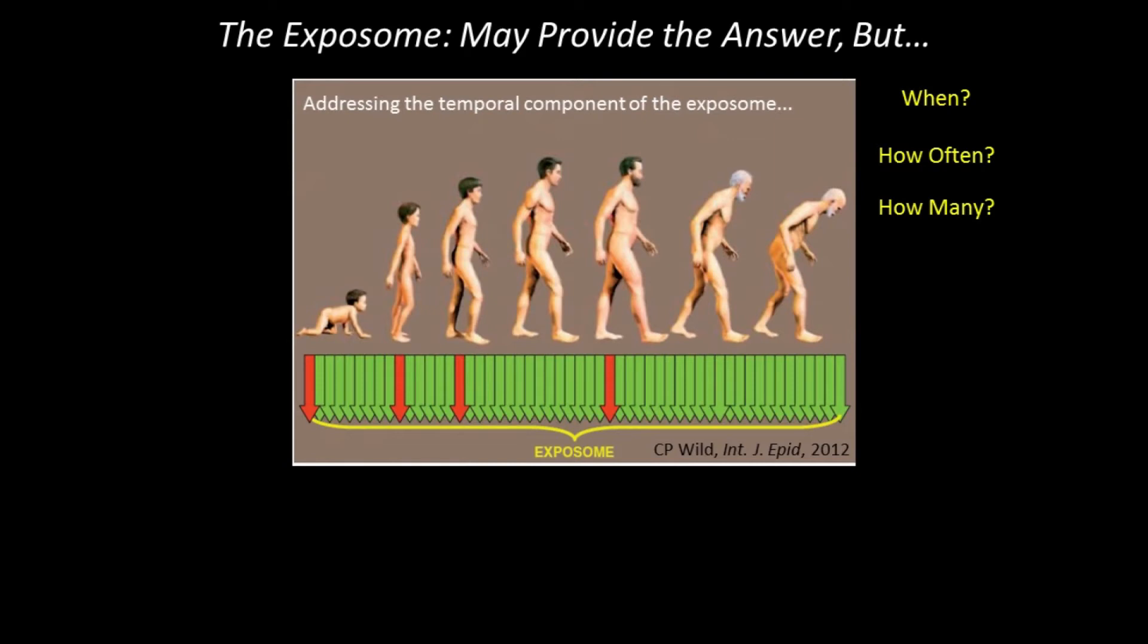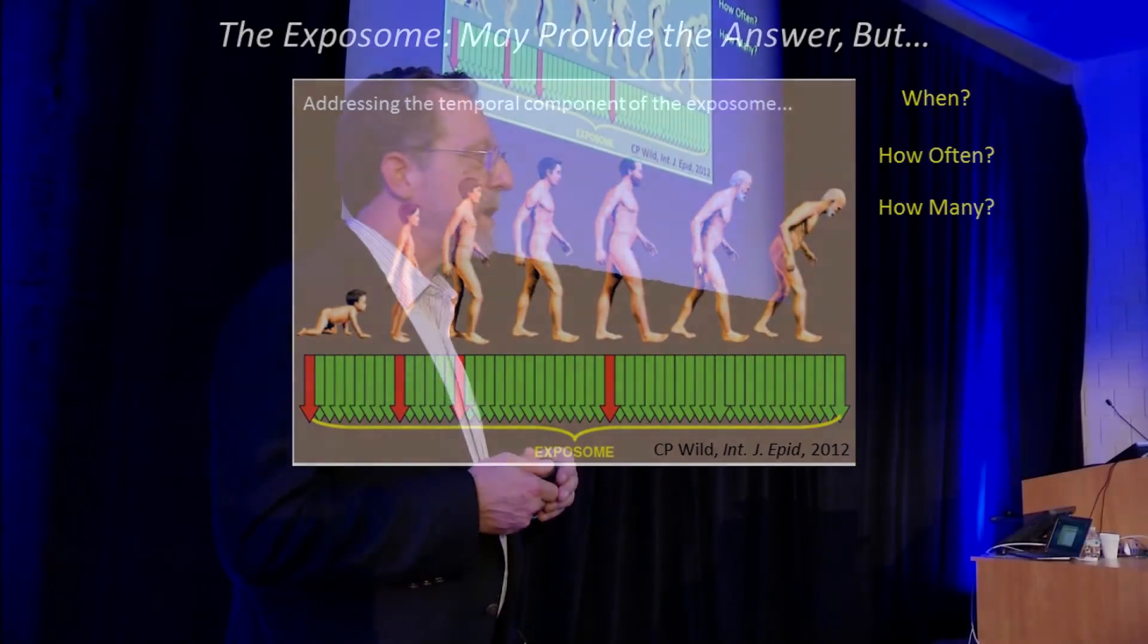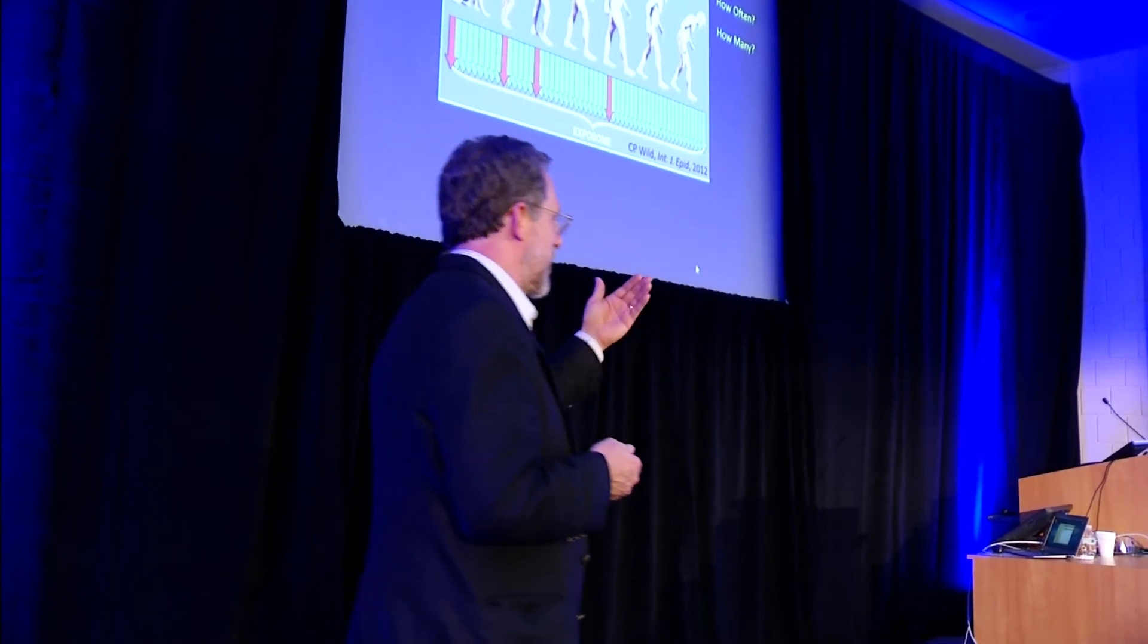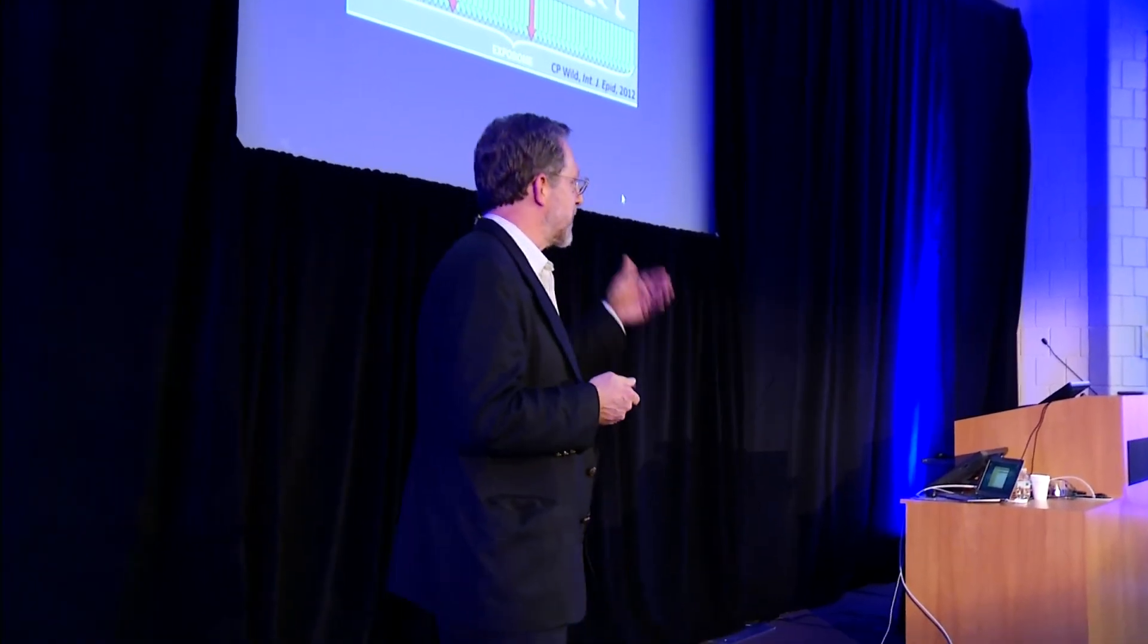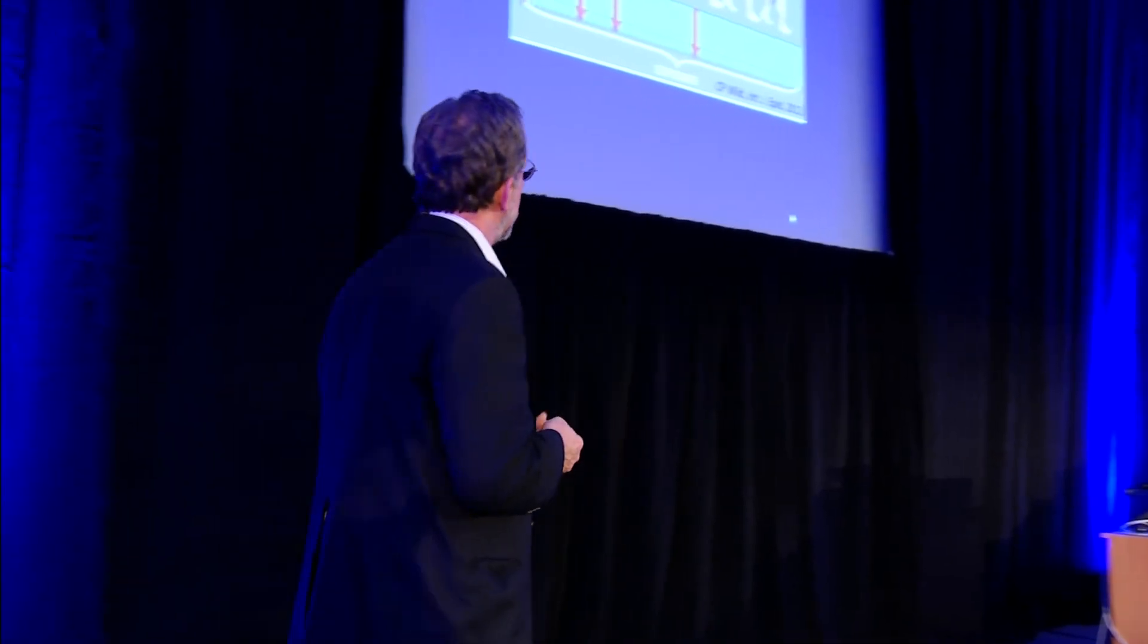So the fallback position that the red arrows are indicating is that we might be able to capture critical moments in the development of the human, as is being done in our center here, early life exposures, determining adult onset of disease. So prenatal sample, early childhood, early adult, and then full adult, may be sufficient, but we just don't know.